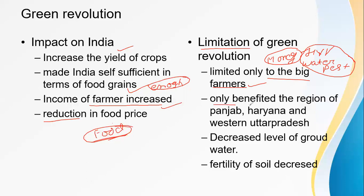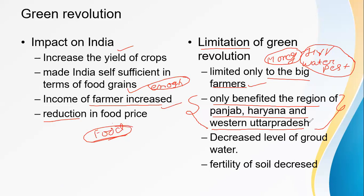The Green Revolution also only benefited the regions of Punjab, Haryana, and Western Uttar Pradesh. Why? Because in these regions there were mostly fertile plains, good water facilities, and many rivers. The farmers here were big farmers. Even now, in Haryana and Punjab you will find lots of big farmers who are producing crops, consuming them, and selling the surplus crop in the market.